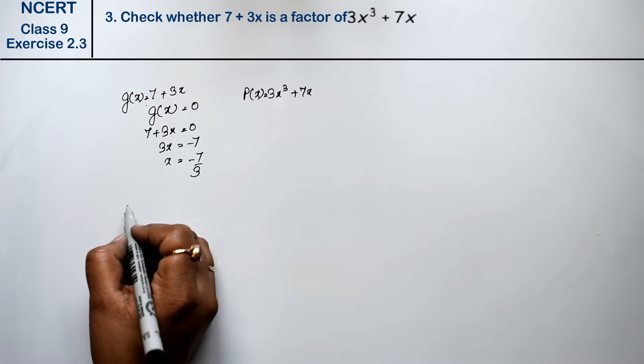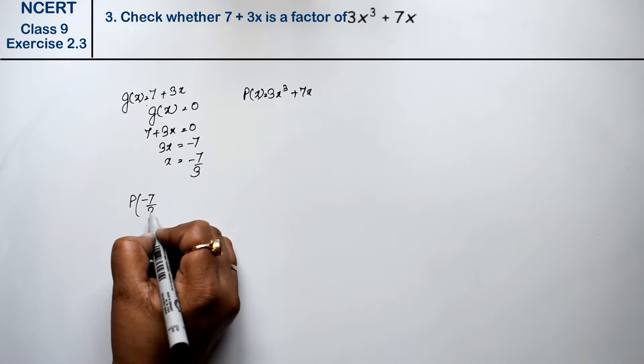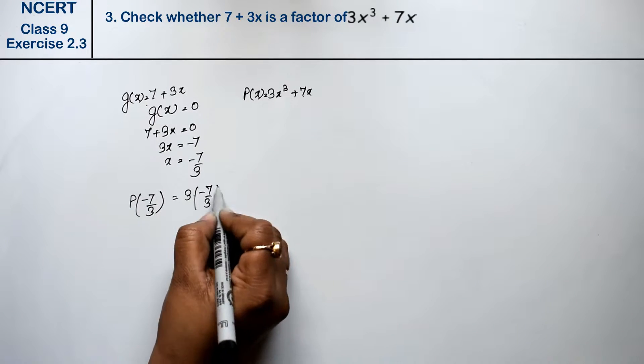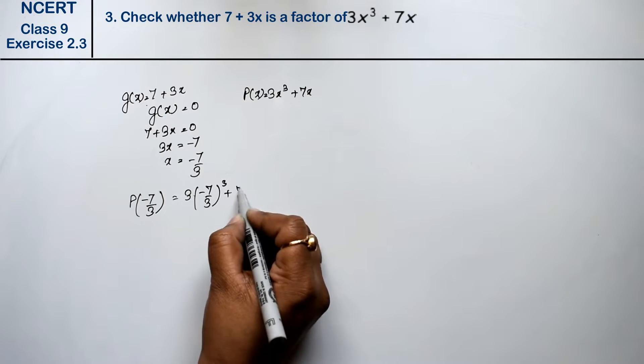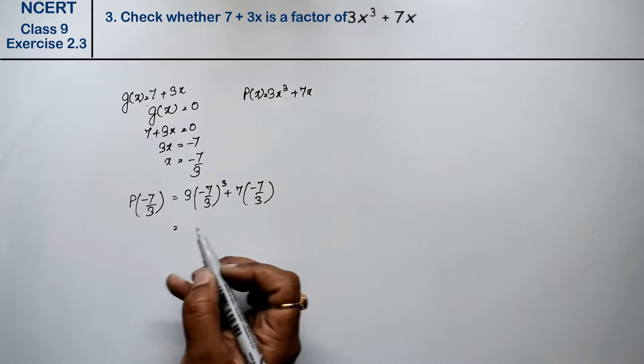Now we will put minus 7 upon 3 in place of x in p(x). So p of minus 7 upon 3 equals to 3 into minus 7 upon 3 cube plus 7 into minus 7 upon 3. So what did we get?